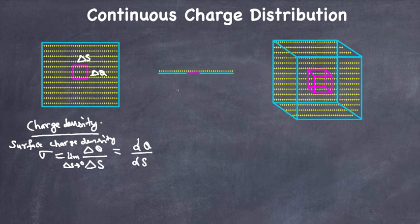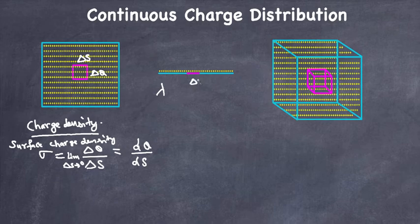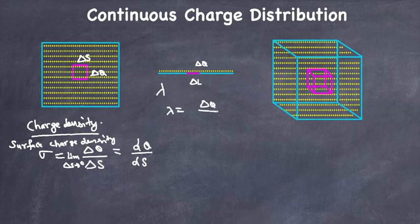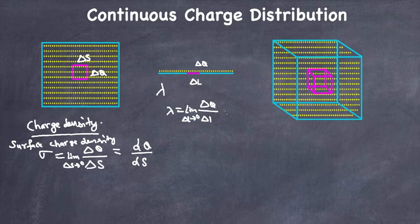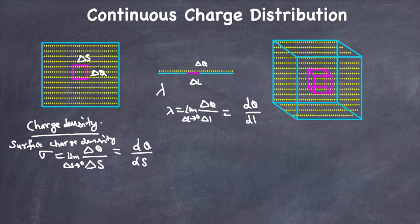The linear charge density for a line or wire is represented by Lambda. The pink line element shown here is Delta L, and the charge on it is Delta Q. So Lambda, the linear charge density, equals Delta Q over Delta L, with the limit as Delta L approaches zero — which can also be written as dQ over dL. This is called the linear charge density; charge is continuously distributed on this line, and Delta L is a small line element.